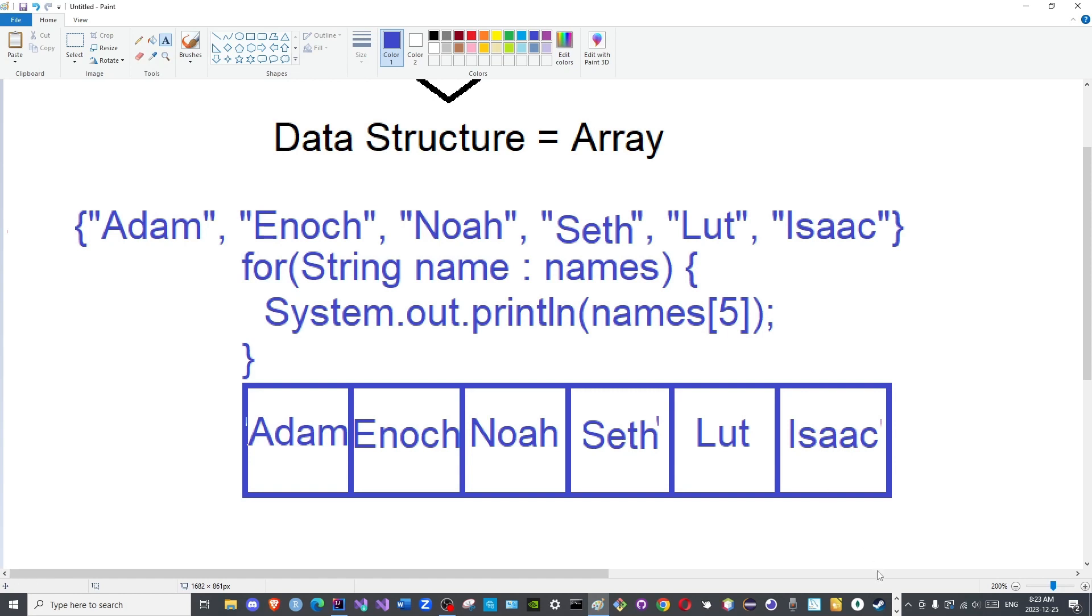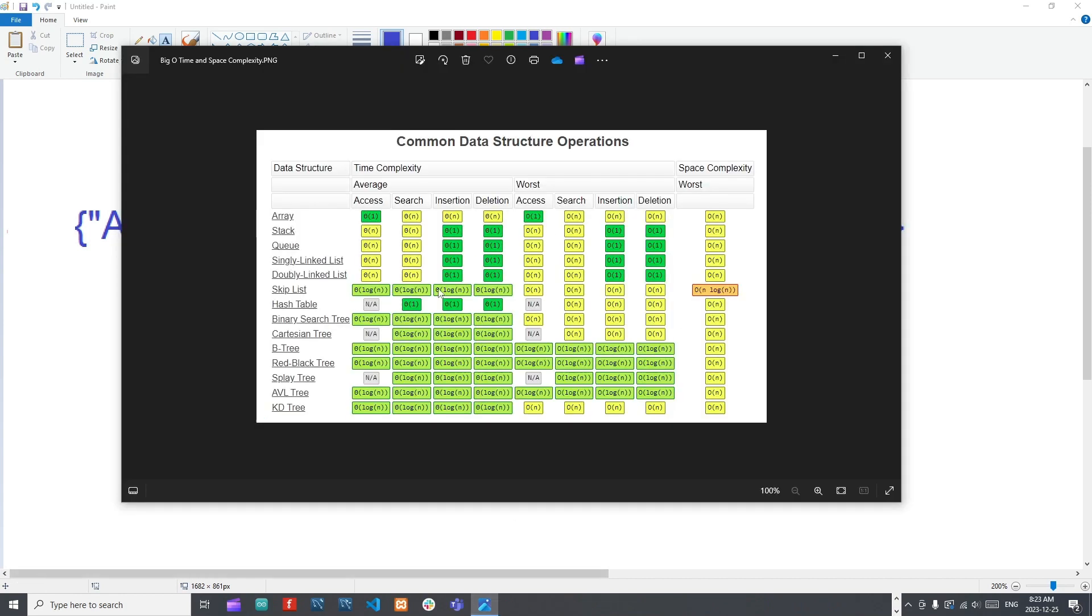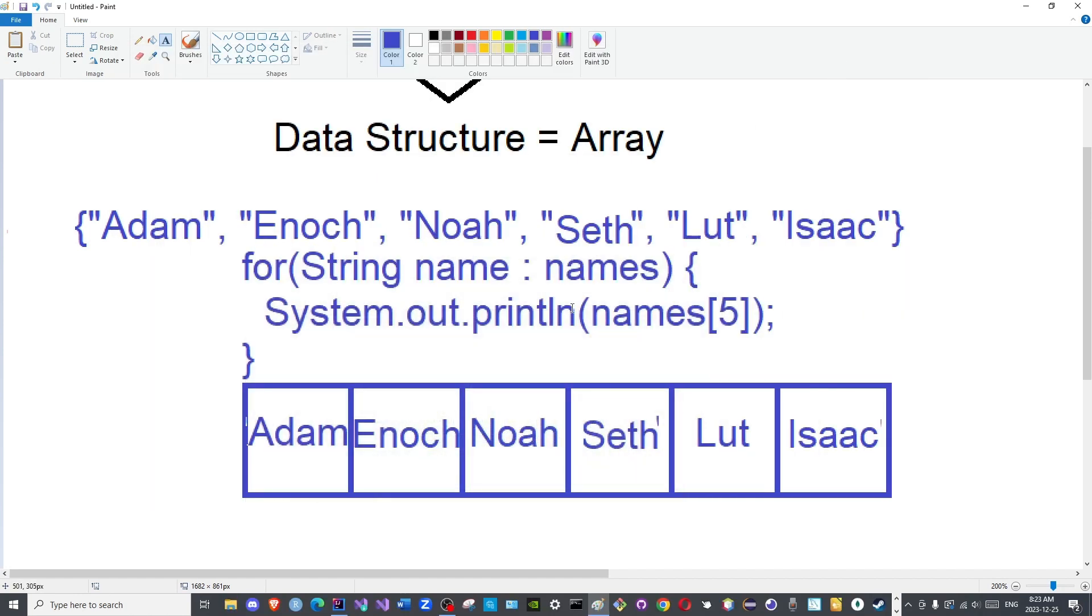To overcome this issue, hash tables were designed to expedite the process as you see here, as opposed to the slow process of arrays. But how are hash tables faster than arrays when they are built upon arrays? They use arrays as their foundation. How are they faster? Because of this part here, the hashing. So what happens or how is a hash used?